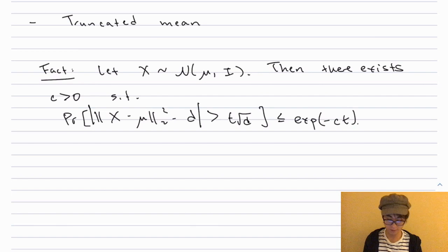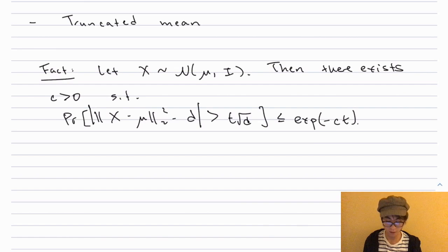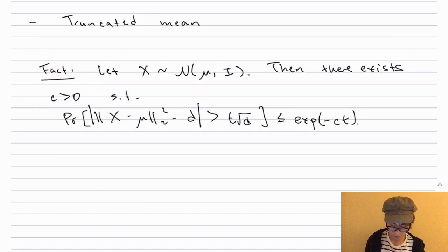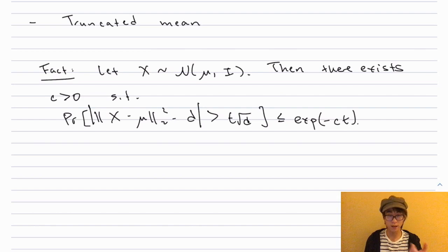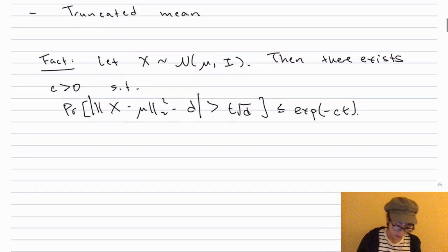Consider robustly learning the mean of a Gaussian. If x is a Gaussian with mean μ and identity covariance, the L2 distance of x from its mean concentrates very strongly around √d. Formally, the probability that the squared distance between x and μ differs from d by something like t√d is exponentially small. So with very high probability the squared distance is close to d, meaning the L2 distance is about √d.